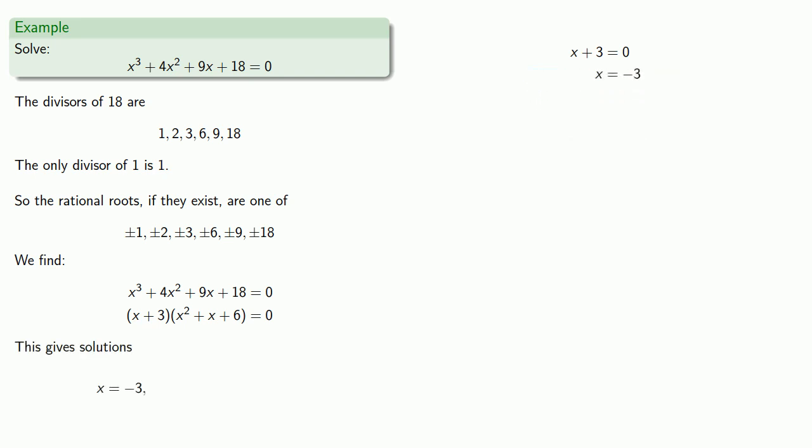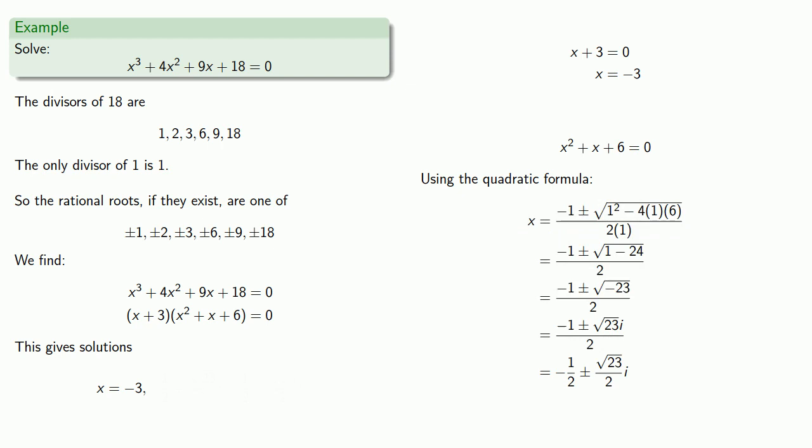Or x squared plus x plus 6 is equal to 0, which we'll solve using the quadratic formula. And so we have our three solutions, two of which are complex numbers.